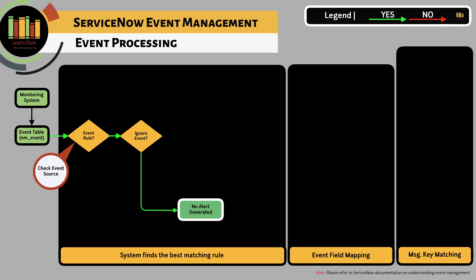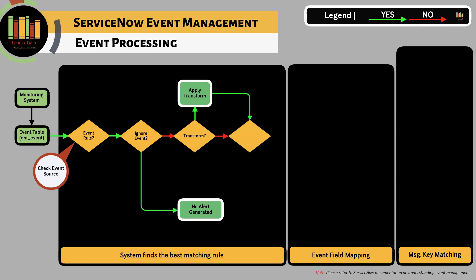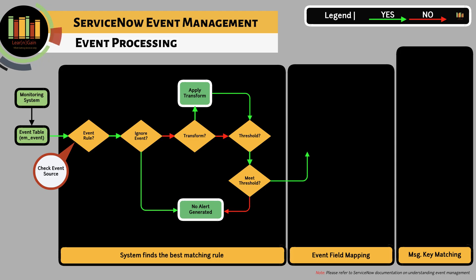You can also ignore events matching a specific criterion by selecting the Ignore Events checkbox within an event rule. If the Transform and Compose tabs are defined, the event information will be parsed and transformed to the desired output. If thresholds are enabled, events are accumulated until a threshold is met — similar to polling within a monitoring tool based on a defined threshold against a metric.